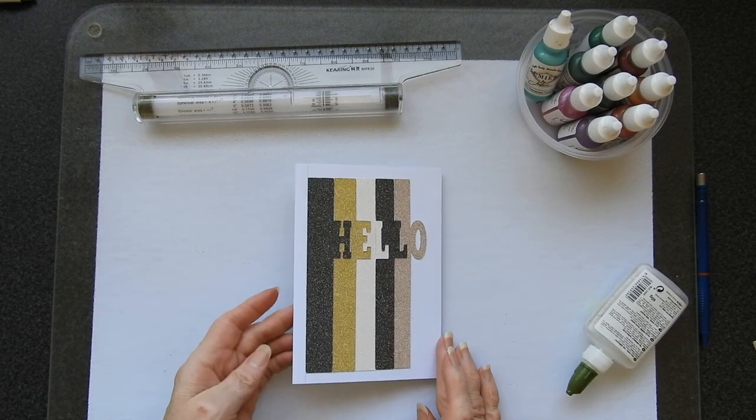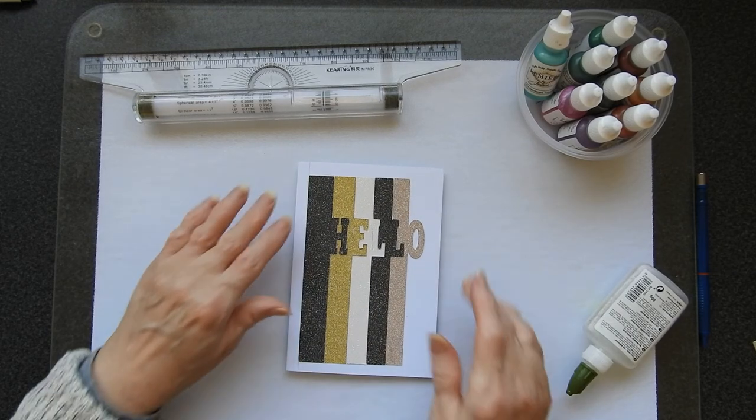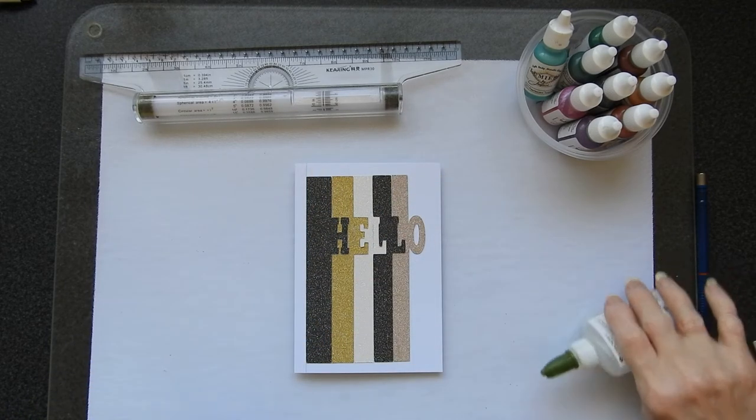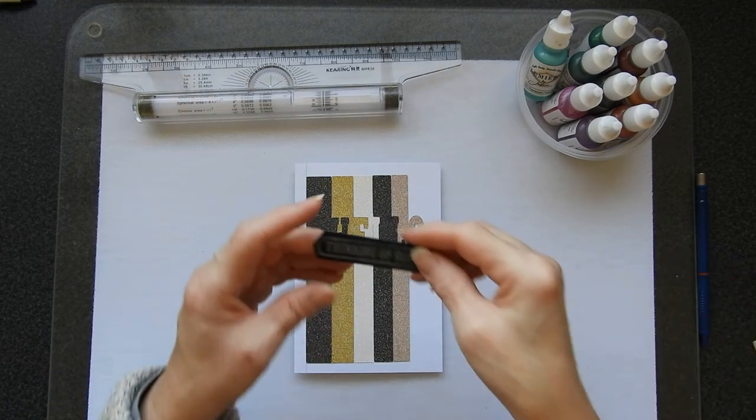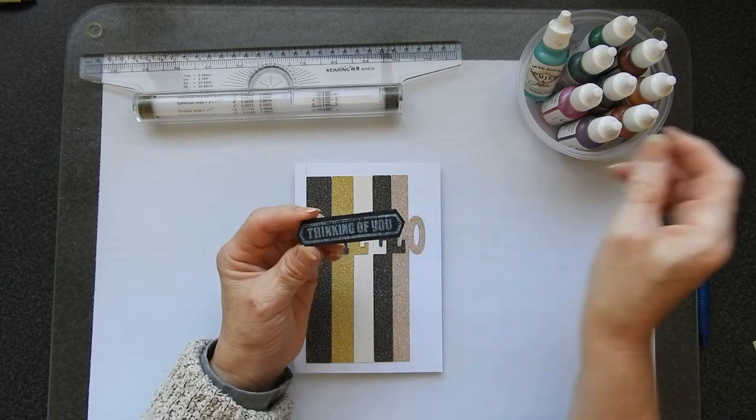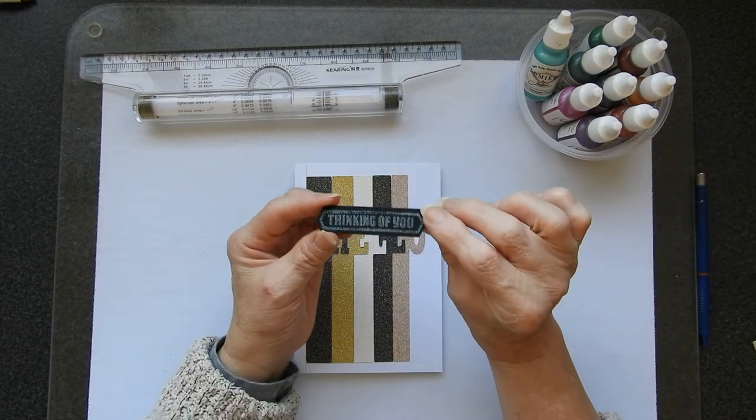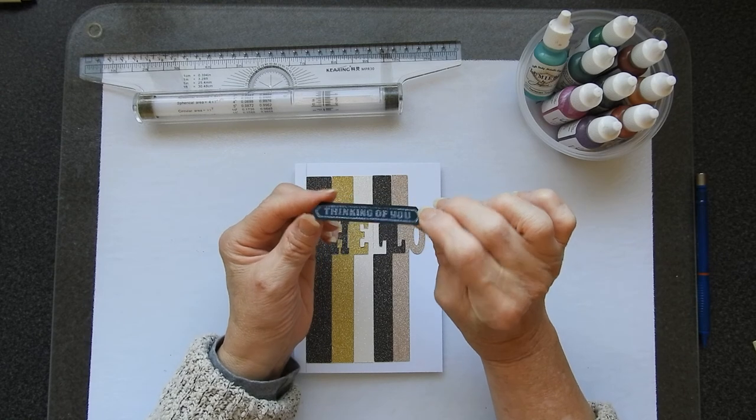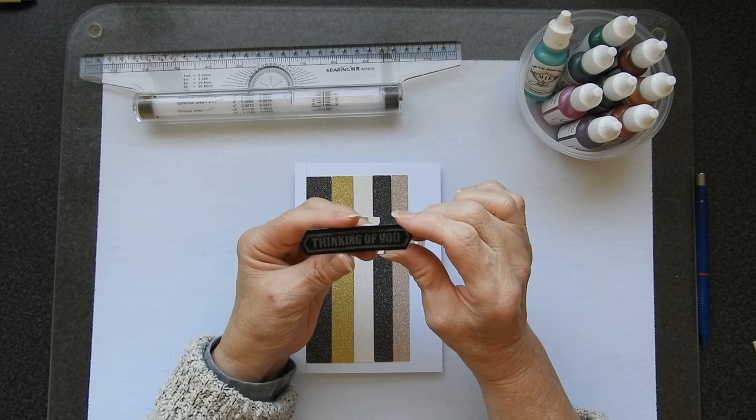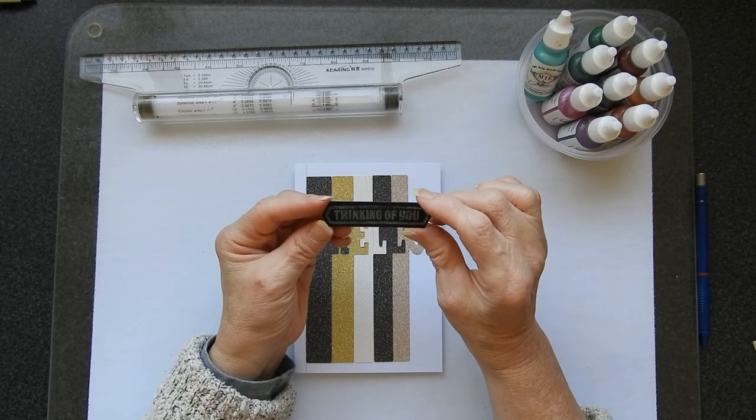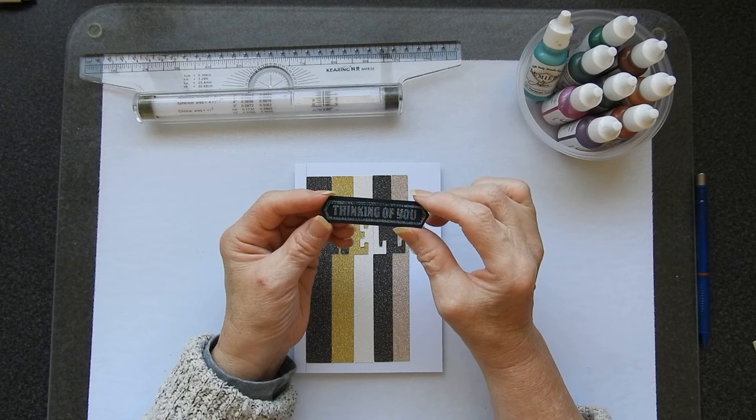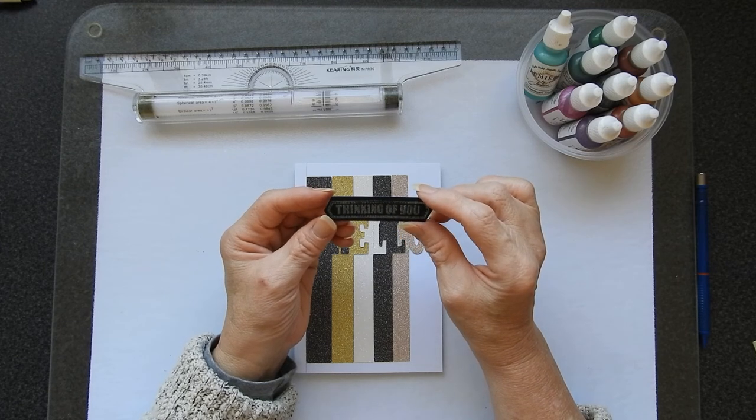So there we are. That's already looking pretty good. I'm quite happy with the way that's going. So the other thing that I've done is I have stamped a sentiment. Now this particular sentiment was stamped on a blue card would you believe and not with ink. See it's actually blue. All I did because I didn't have a scrap of black card I simply colored my blue card with some black ink.